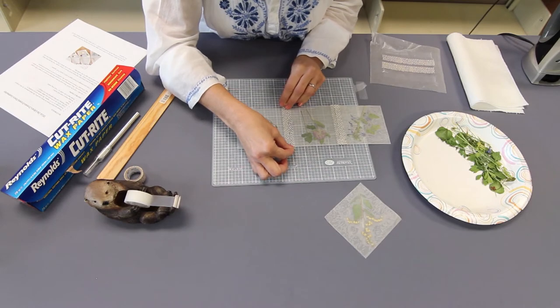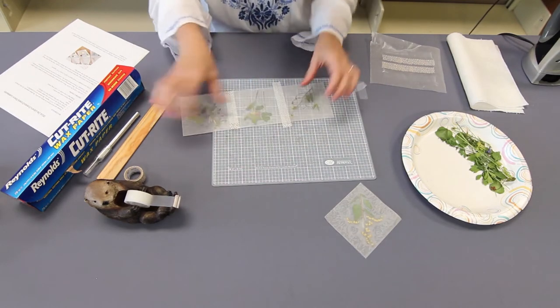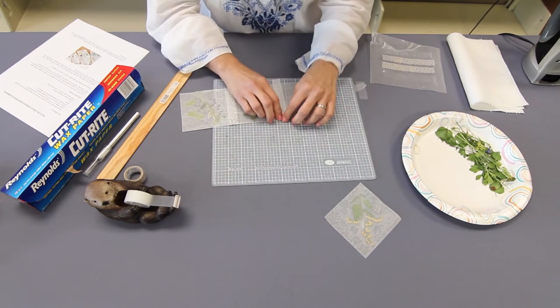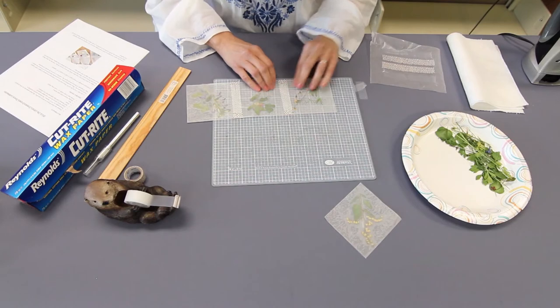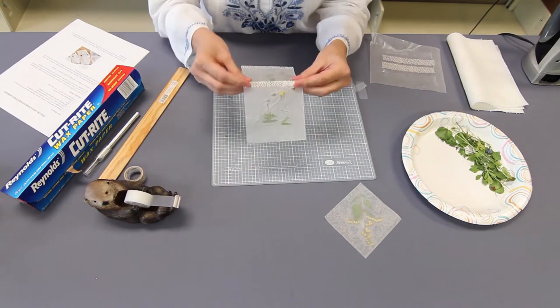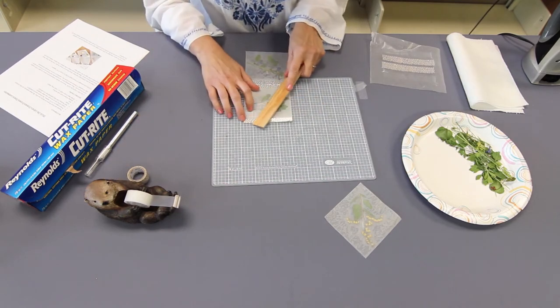Center it as best you can. If you don't do it well the first time and you want to do it over, you can lift the washi tape up and reapply. Doesn't hurt a thing. It's got lots of stickiness in it and you can do that several times if you need to. Make another crease. Use a ruler to make it sharp.